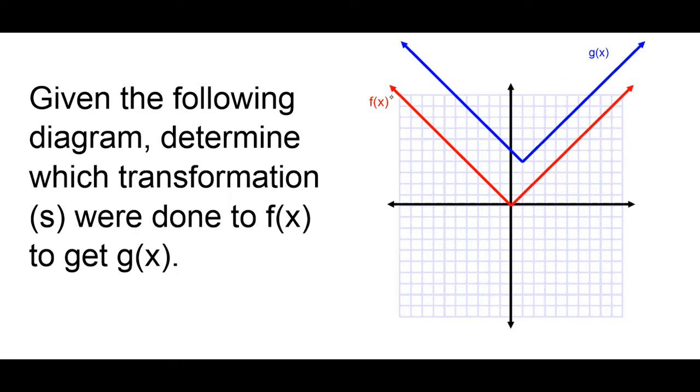I see here that f of x, my first function, is this red one. And g of x is the blue one. So, I'm looking to see what transformation is happening. I'm going to start from this little point right here and see how much has it moved over. This is up 1, 2, 3, 4, over 1. And so, I see that this is a translation. So, we can say f of x was translated 4 units up and 1 unit right.